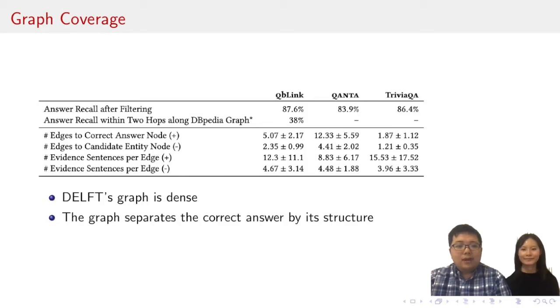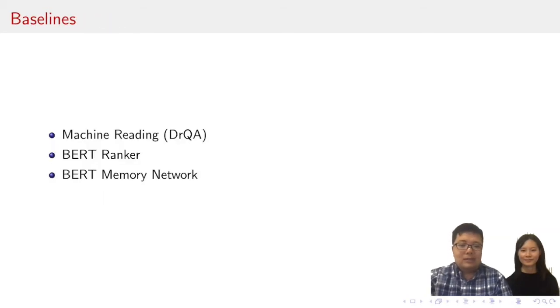DELFT contains two components, the graph construction and graph modeling. How to evaluate the first part, graph construction? We evaluate the graph construction by computing the answer recall of the generated subgraph. Overall, more than 80% of questions are answerable by the subgraph. In comparison, we manually examine 50 random sampled Quizlink questions, but only 38% of them are reachable within two hops in the DBpedia graph. So using free text as a knowledge source, our question-grounded knowledge graph ensures very high coverage. Also, we compute the statistics of the graph. We can see the graph naturally separates the correct answer. Compared to the incorrect answers, the correct ones are connected by significantly more evidence edges, and also edges have more sentences.